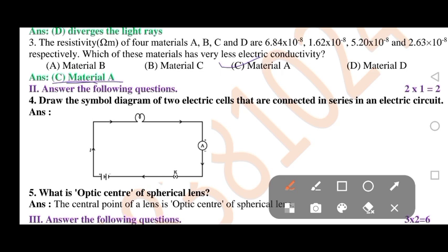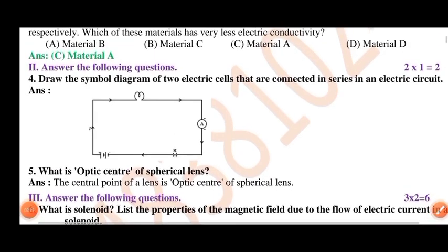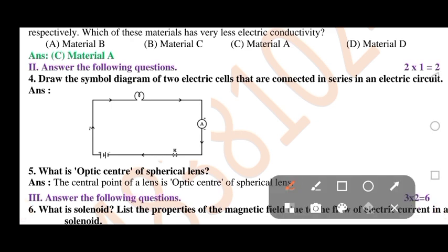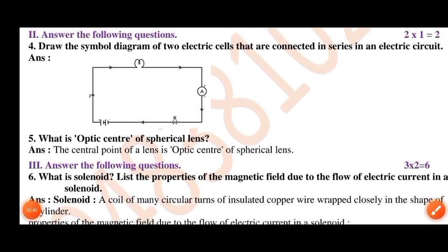Answer the following questions. One mark each. Draw the symbol diagram of two electric cells that are connected in series in an electric circuit. Now the simple diagram is here. What is the optic center of a spherical lens? The central point of a lens is the optic center of a spherical lens.